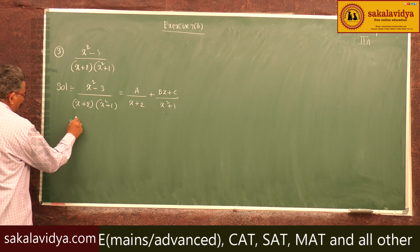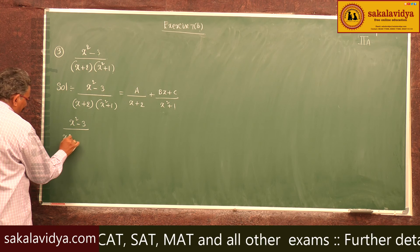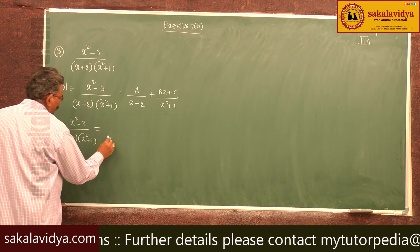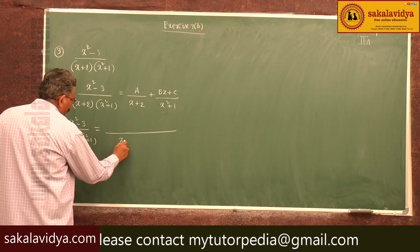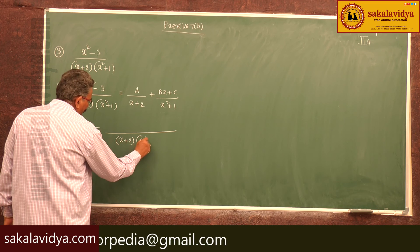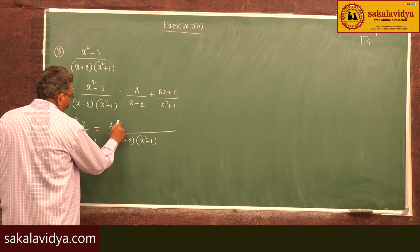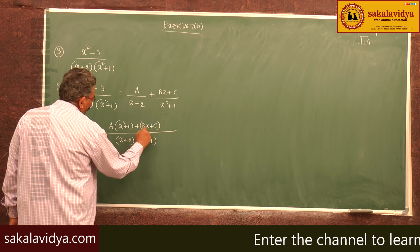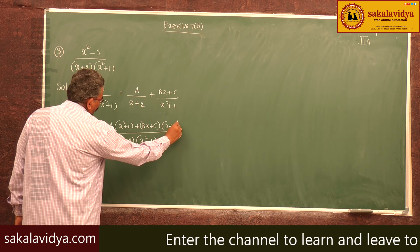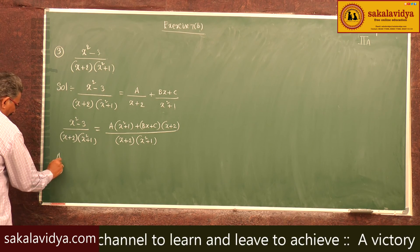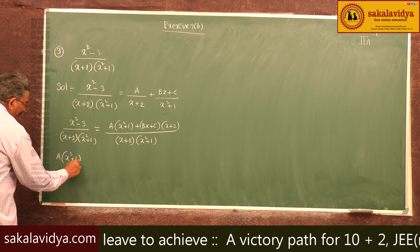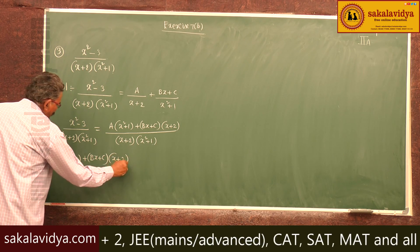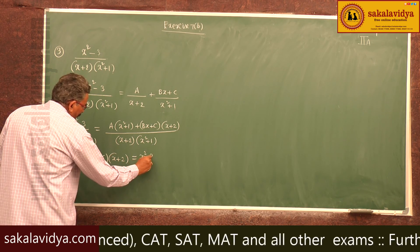Multiplying both sides by (x+2)(x²+1), we get: A(x²+1) + (Bx+C)(x+2) = x² - 3.